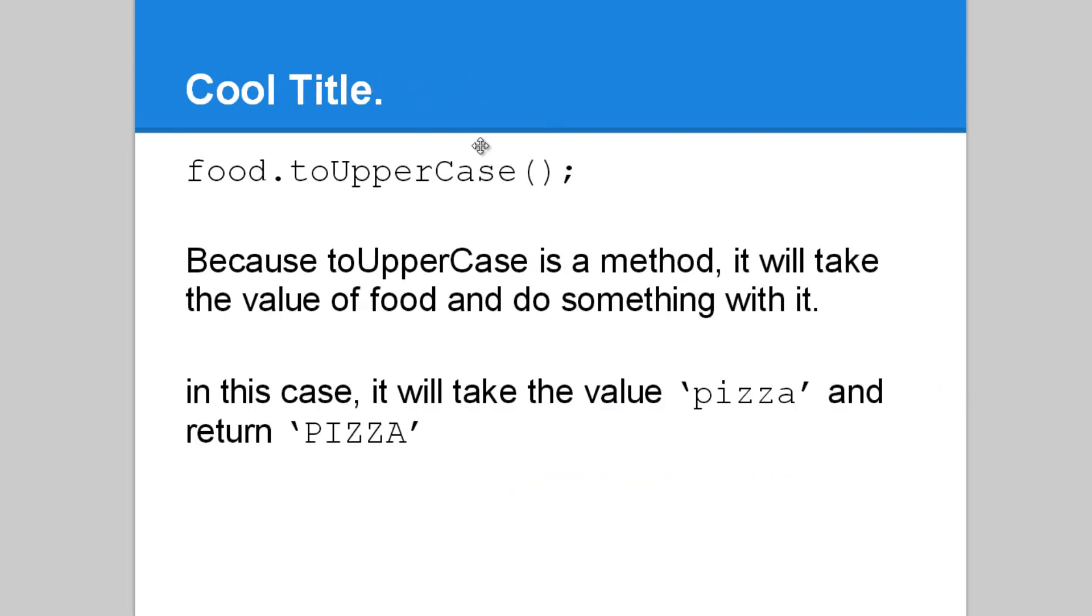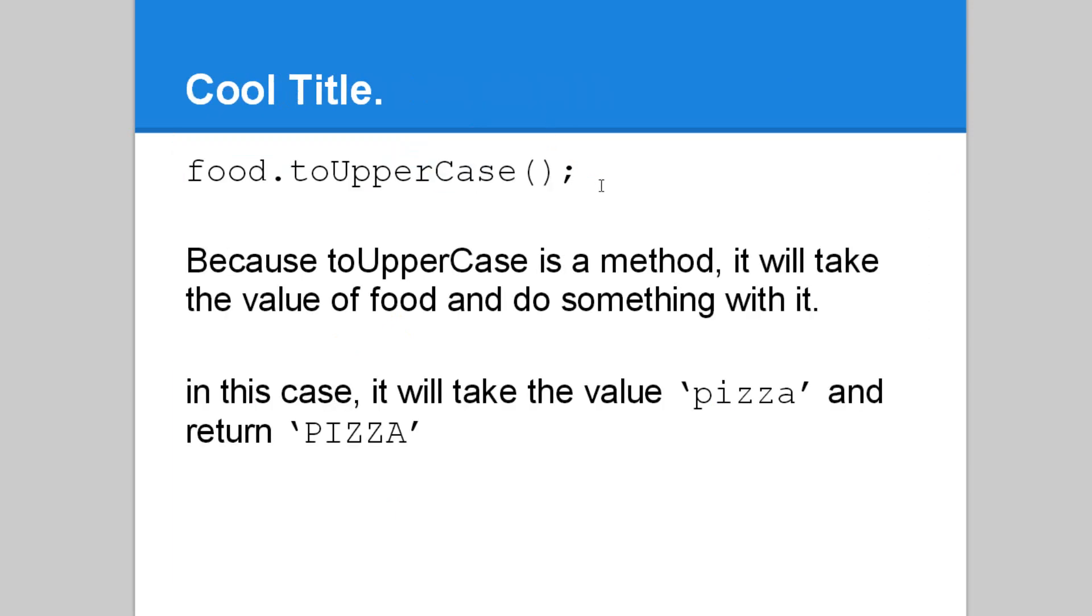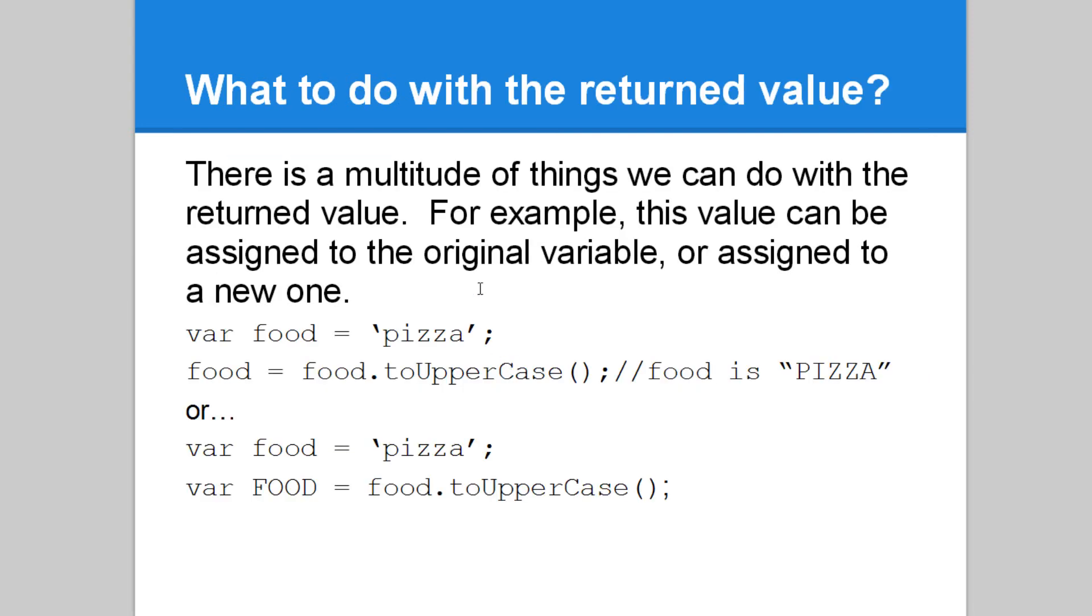Here we have food, to uppercase. Because to uppercase is a method, it will take the value of food and do something with it. In this case, it would take the value pizza, which is what we assigned, and it will return pizza in all capital letters.